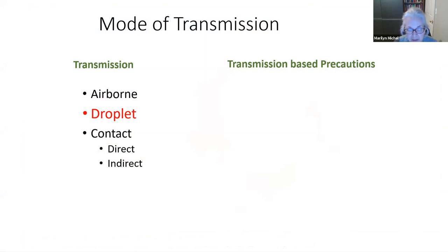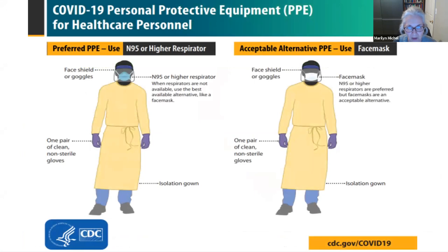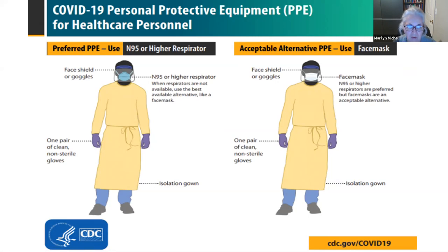We use transmission-based precautions to prevent this virus from spreading. The CDC's preferred protection is an N95 respirator or PAPR, along with a face shield or goggles to protect the eyes, gloves, and a gown. If you don't have an N95 or PAPR and no aerosol-generating procedures are occurring, an acceptable alternative is a face mask, face shield, gloves, and gown.